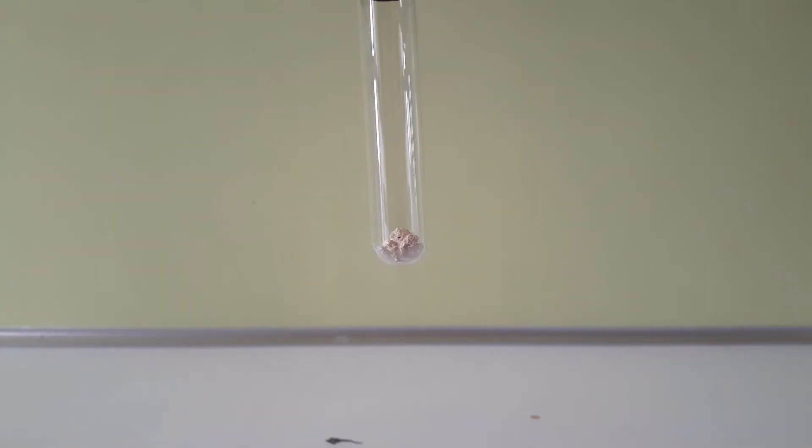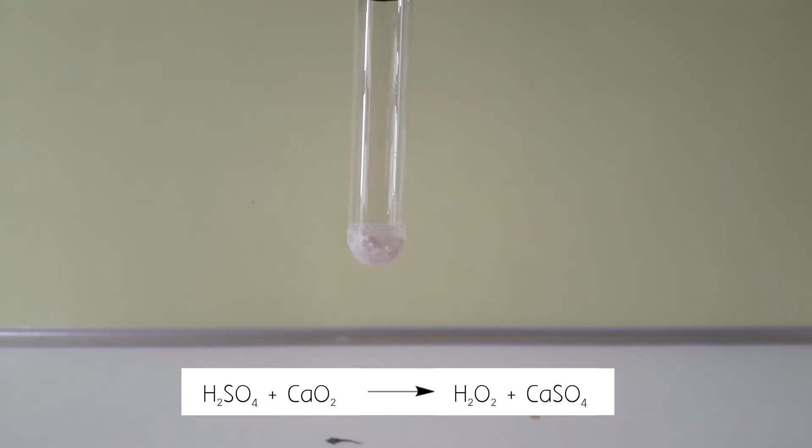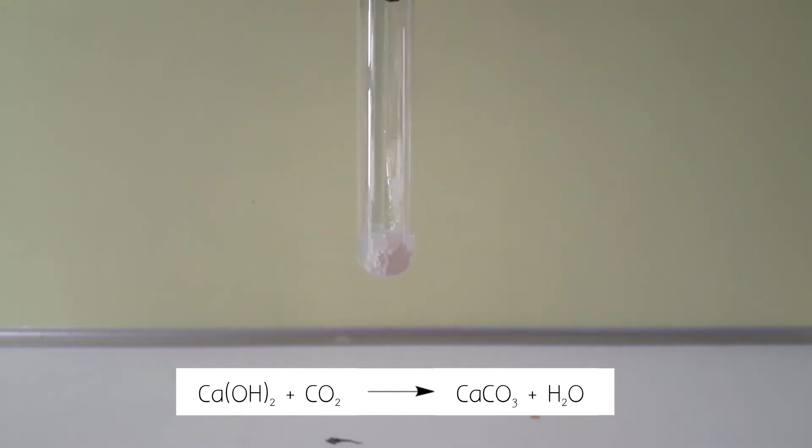Now for the test for peroxides, I add some of the material to a test tube and then add sulfuric acid to it. This should generate hydrogen peroxide and calcium sulfate. You can see immediate bubbling of the solution, and this could also be contributed to some calcium carbonate which was generated during drying in air by the reaction of calcium hydroxide and CO2 gas.